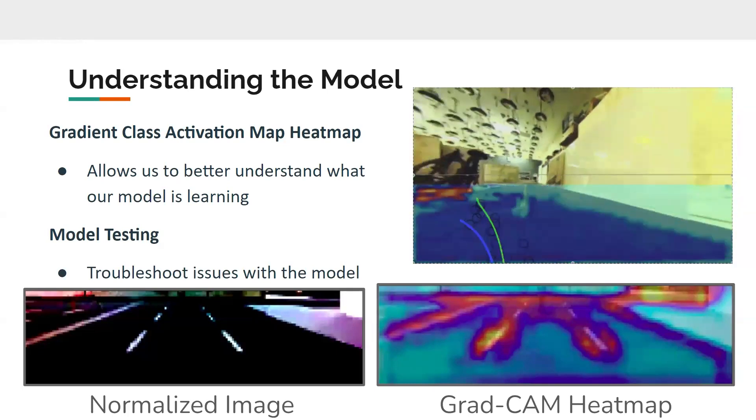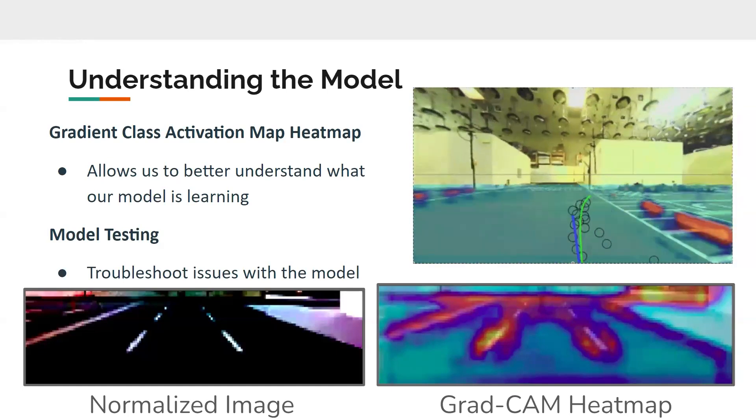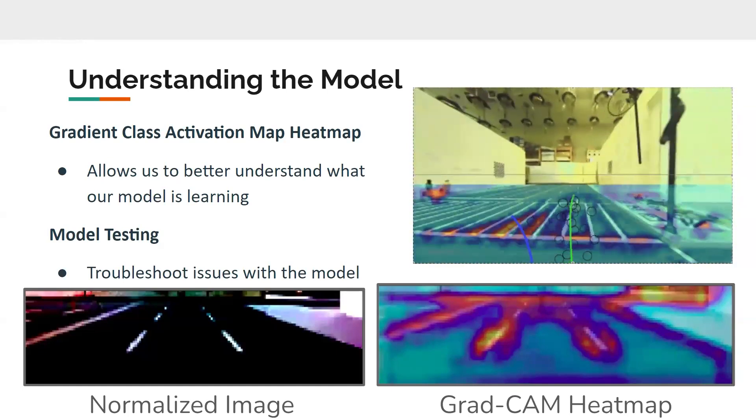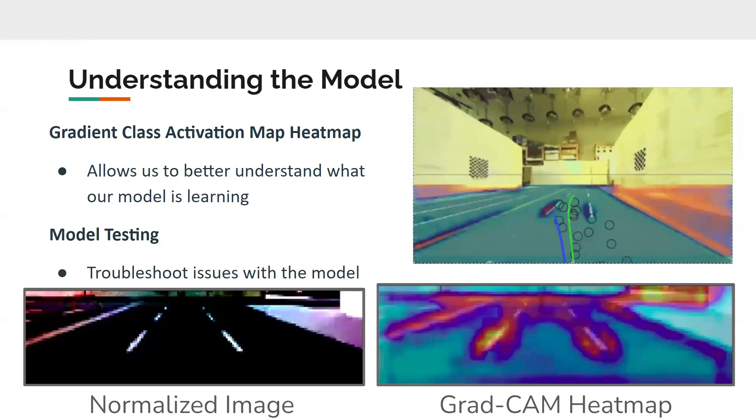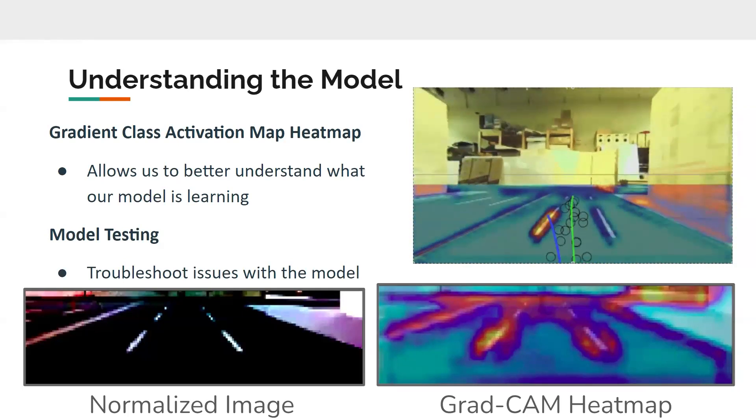And it kind of tells us the regions you can see here that are actually affecting the output. And we compare that to the normalized image you see here that we actually input into our model. And it kind of helps us understand where the model's excelling and failing and what data is actually good to use.